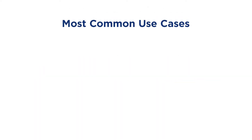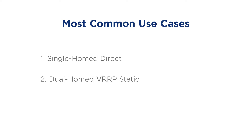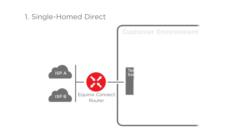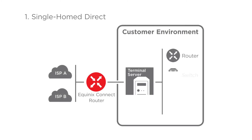Most common use cases. To make quoting and ordering quick and easy, we can guide the customer to a suggested configuration based on how they want to use the service. Here are three typical use cases to choose from. Single-homed direct, when used for out-of-band management — this is a low bandwidth, independent, and diverse connection for managing servers and network equipment that doesn't rely on the primary internet access path.